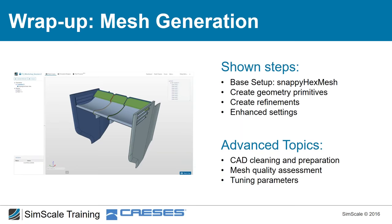Meshing wrap-up: we defined the base mesh box with the number of elements in each direction and the material point; we created a Cartesian box geometry primitive; and we applied surface, edge, region, and layer refinements.